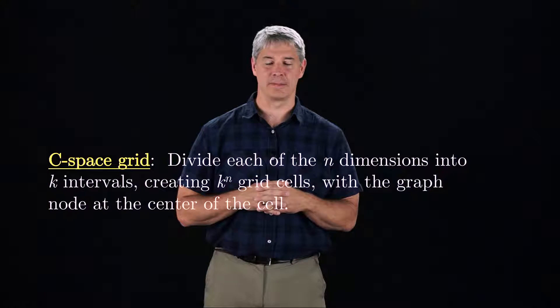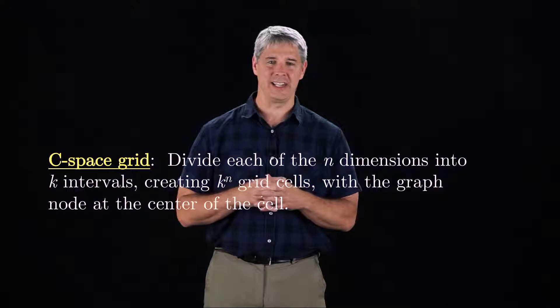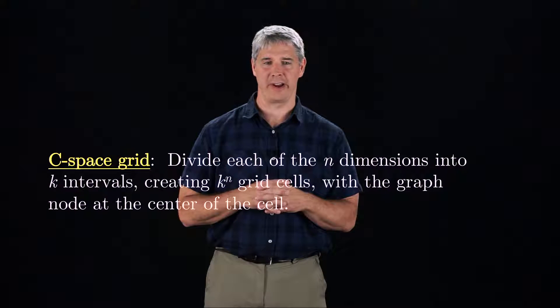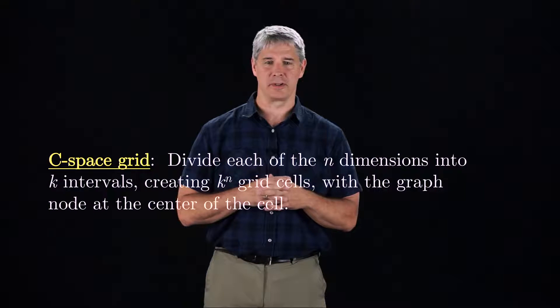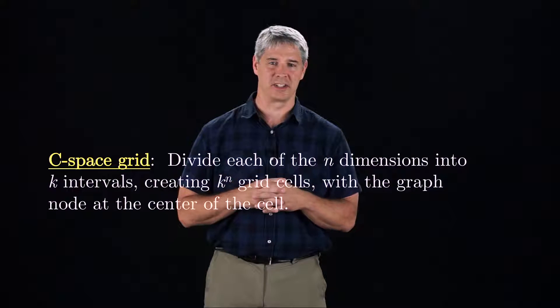In this video, we'll plan motions on a graph derived from a grid on the C space. If the C space has n dimensions, we can subdivide each dimension into k intervals, creating a total of k to the n grid cells. Each cell is represented in the graph by a single node, representing the configuration at the center of the cell.